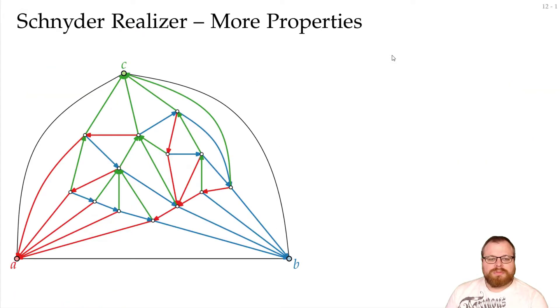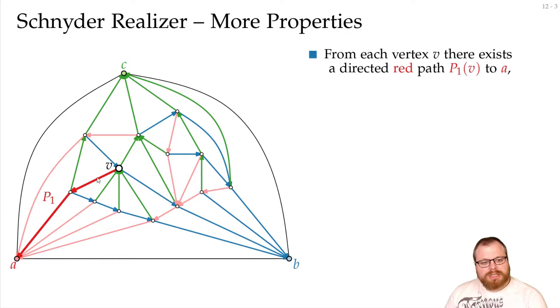For that we need some more properties and definitions. Let's have a look at a single vertex here. We know that every color gives us a tree that's rooted in a vertex on the outer face. If we walk along the red tree, we have a path that goes to vertex a.